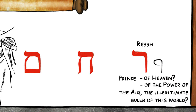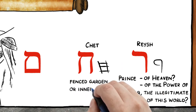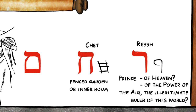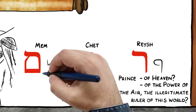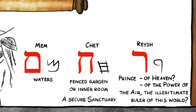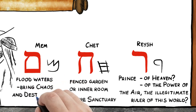The second letter in the Hebrew word for compassion is Chet. Chet is pictured as a fenced or walled garden or inner room. It means to separate out in order to provide protection, a place of refuge, a secure sanctuary. Finally, Mem is pictured as waters — in this case, the picture of floodwaters, waters that bring chaos and destruction.